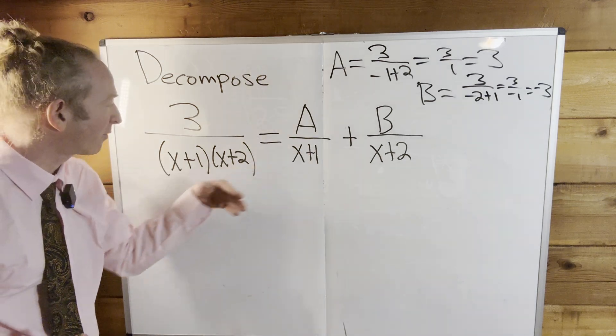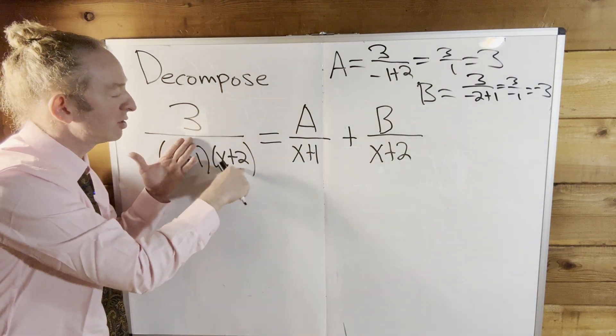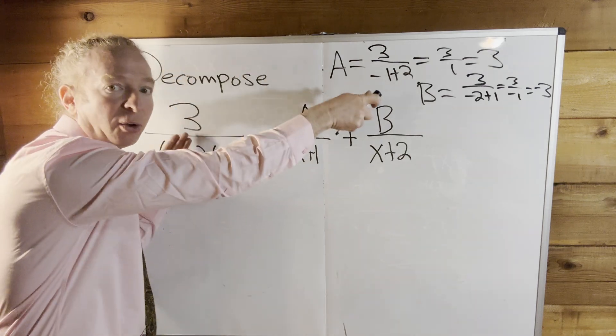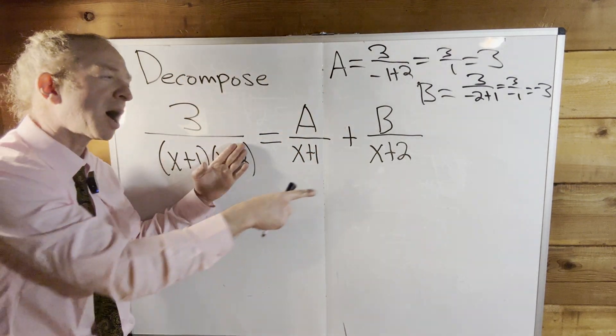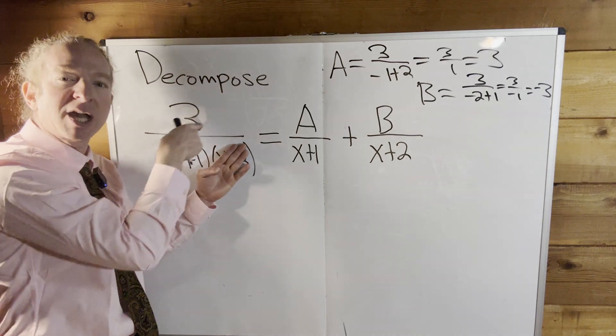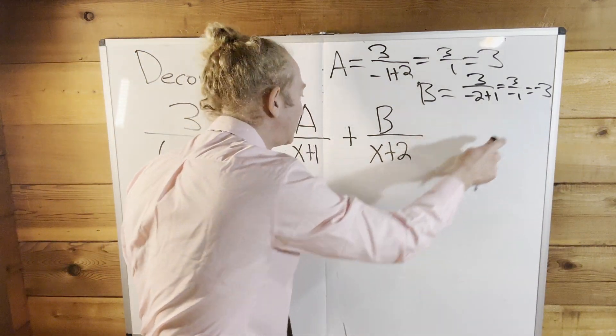Let's find A again. To find A, you cover up what's under A. Plug in negative 1. 3 over negative 1 plus 2 is 3 over 1, which is 3. To find B, we cover up what's under B. Negative 2 causes the issue. 3 over negative 2 plus 1 is negative 3. We did it.